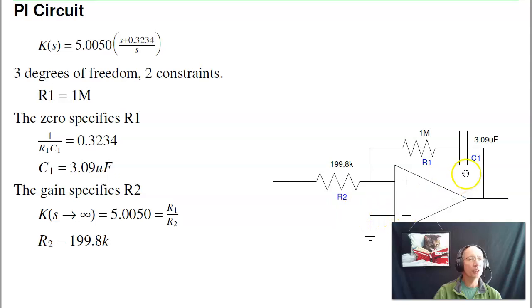In terms of a circuit, all that changes is I add that resistor. Used to be I just had a capacitor resistor. Now for about 0.9 cents, I can make that a PI compensator.